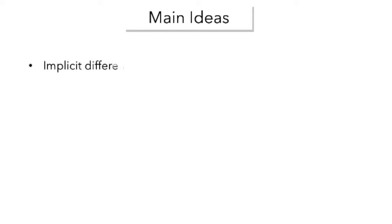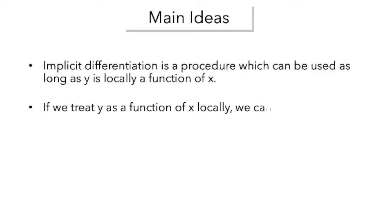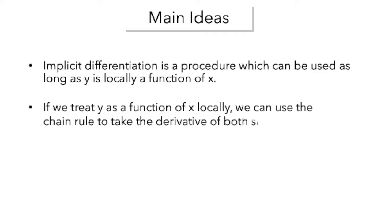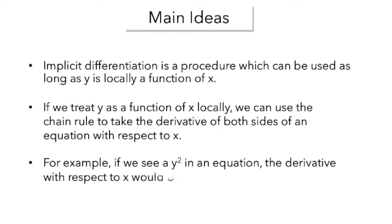Here are the main points we will address in the video. Implicit differentiation is a procedure which can be used as long as y is locally a function of x. If we treat y as a function of x locally, we can use the chain rule to take the derivative of both sides of the equation with respect to x. For example, if we see y squared in an equation, the derivative with respect to x would be 2y times y prime due to the chain rule.